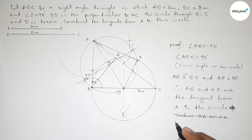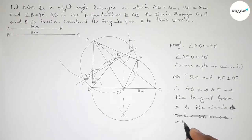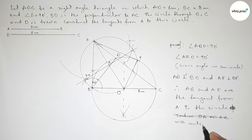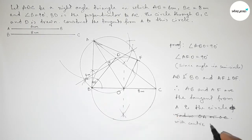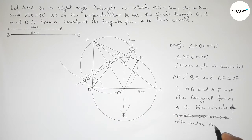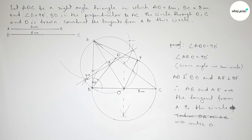Therefore, AB and AF are the two tangents from point A to the circle of radius OB and center at O. That's all — thanks for watching. If this video is helpful to you, please share it with your friends.